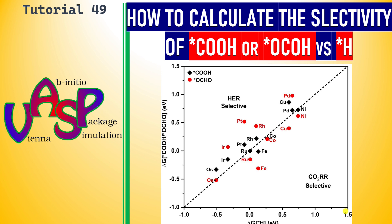This is tutorial 49 in VASP. In this tutorial, I am going to teach you how to calculate the selectivity of COOH or OCHO with H absorption. Before doing CO2 reduction reactions, you have to calculate the binding energies of COOH and OCHO with H absorption. These are the two important intermediates for CO2 reduction, and H absorption is the key intermediate for hydrogen evolution.